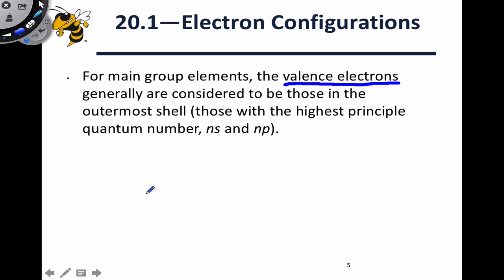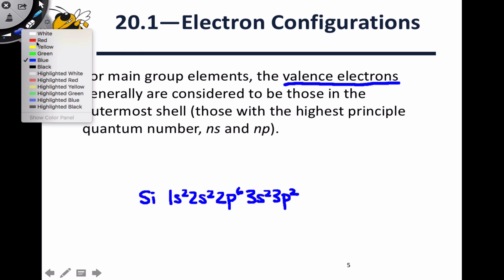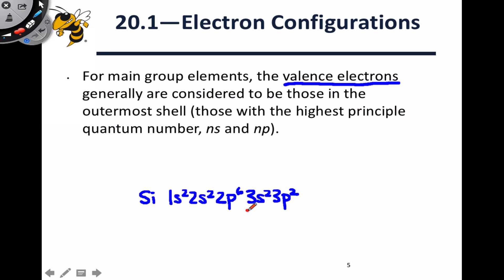In a main group element like silicon, the valence electrons are simply the electrons with the highest principal quantum number in the outermost shell. So the electron configuration for silicon is 1s2, 2s2, 2p6, 3s2, 3p2, and it's the 3s2 and 3p2 electrons that we consider to be the valence electrons because they have the highest principal quantum number, n equals 3.